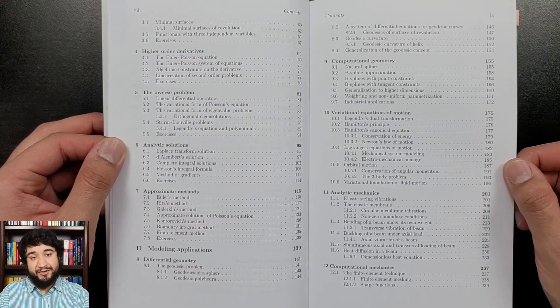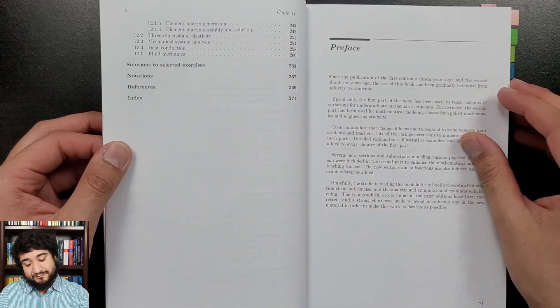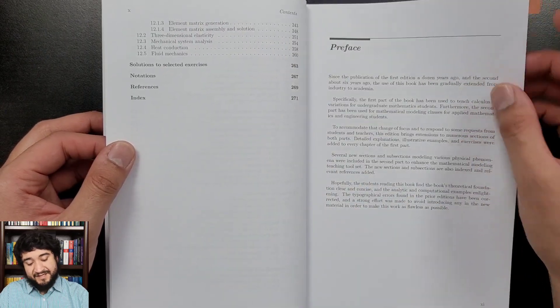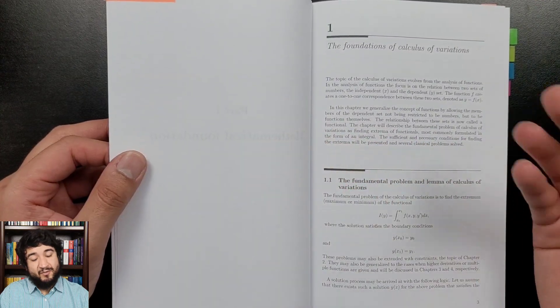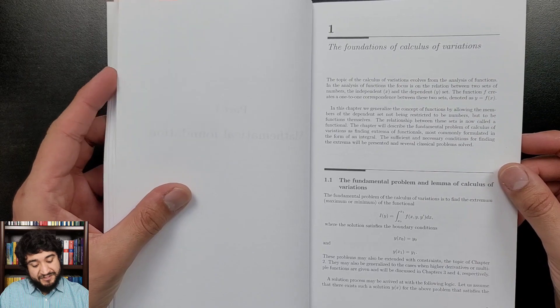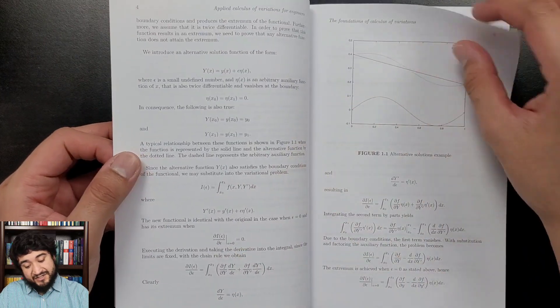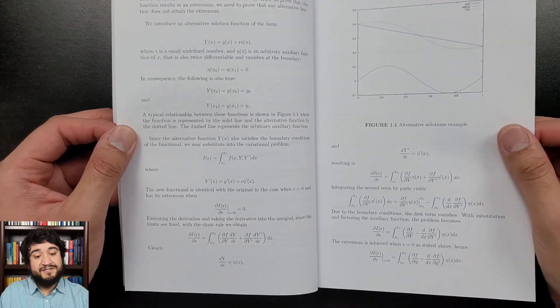Something that I dislike about the book—sometimes I think the writing can feel lazy. So here we go. In the first chapter, in just a few pages here, the author derives the Euler-Lagrange differential equation.